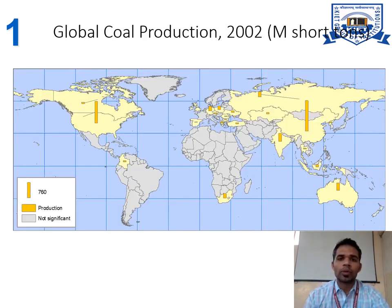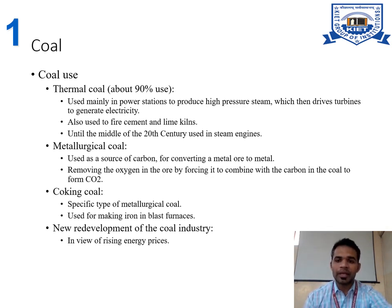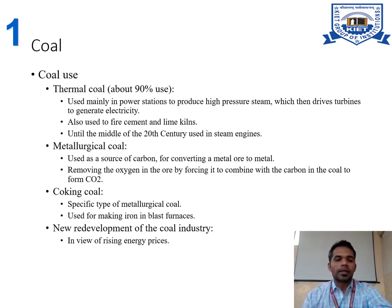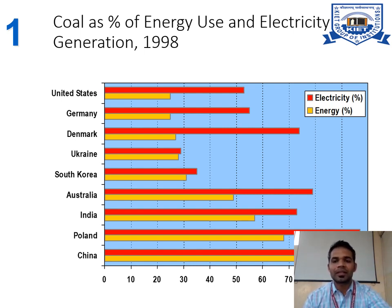This chart shows global coal production. We use coal basically in our thermal power plant, cement plants, lime kilns, and steam engine plants. Metallurgical coal is also used as a source of carbon for converting metal ore to metal, removing oxygen from the ore by forcing it to combine with carbon in the coal to form carbon dioxide. Coking coal is also used for cooking purposes. We are also seeing new redevelopment of the coal industry in view of rising energy prices.